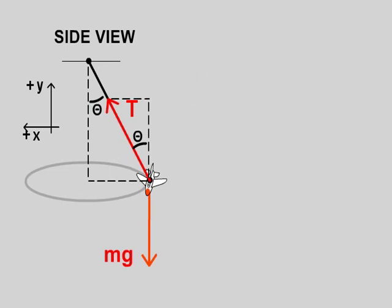That makes this side equal to T sine theta because that's the side opposite the angle and this side equal to T cosine theta.